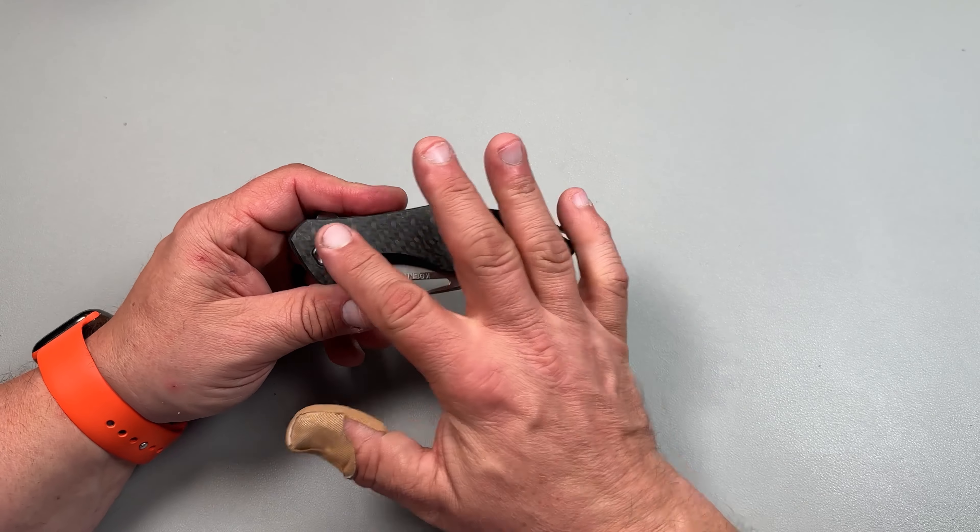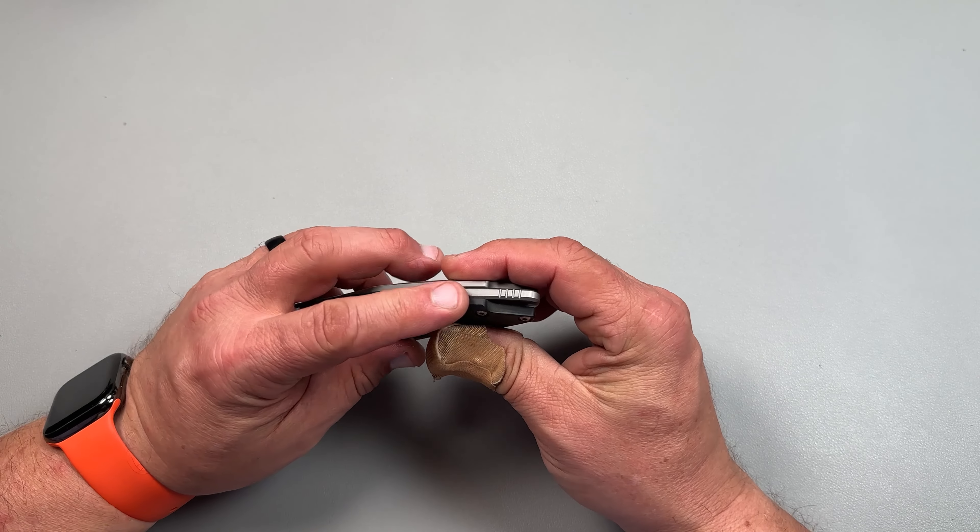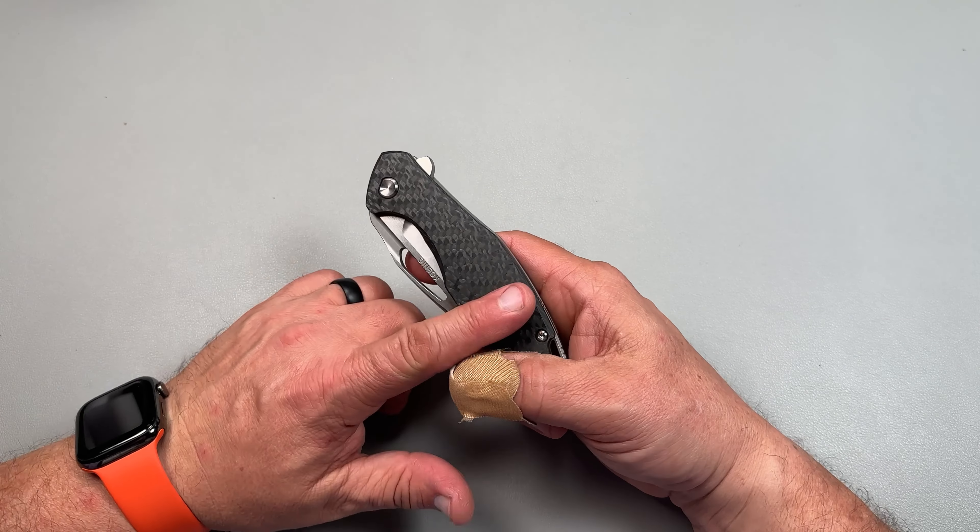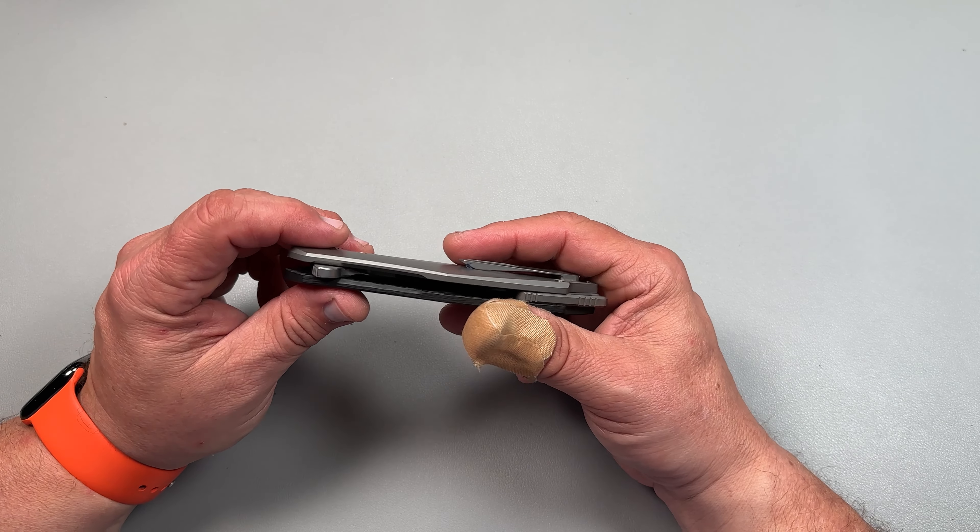So let's talk about the materials. This is carbon fiber, twill carbon fiber, really nicely done. It's a full piece of carbon fiber, not peel ply texture kind of thing put on top. There's no G10 underneath. It's solid.